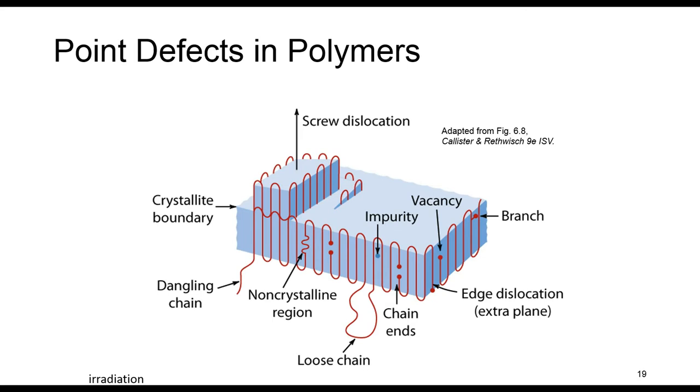Defects usually, to some extent, are due to chain packing errors and impurities such as chain ends and side ends. As you can see here, chain ends or side ends like dangling of chains. There are also impurities or other defects like vacancy and branching, as you can see here.